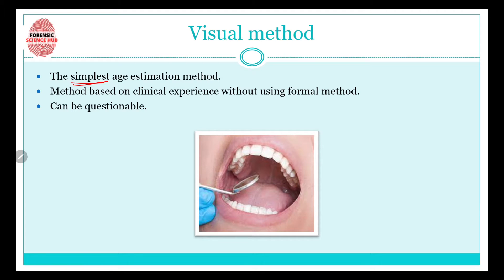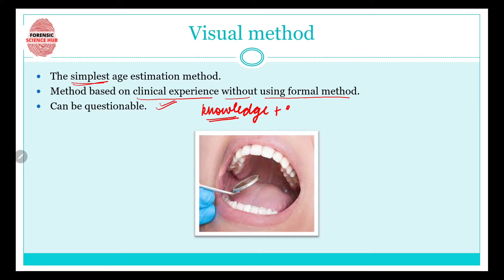In the visual method, we simply visualize the teeth carefully, study them, and then try to give an estimated age of that person. This is the simplest age estimation method, based on clinical expertise without using any formal method. We need knowledge of odontology as well as experience. The forensic odontologist must have both subject knowledge and practical experience.